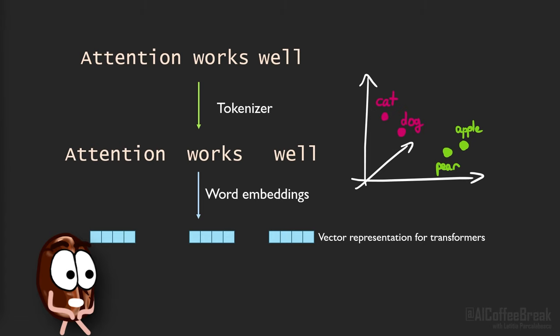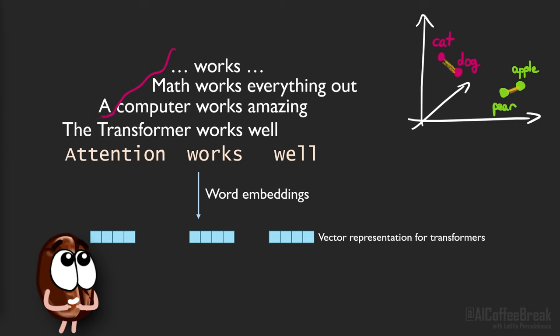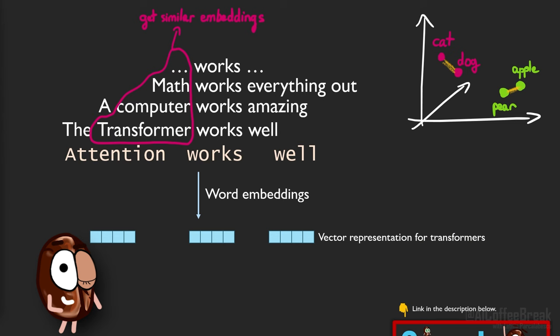The vectors could be initialized randomly, or even better, with word embeddings. Word embeddings work after the idea that distances between embeddings represent word similarity — a word is defined by the company it keeps. Words that are semantically more similar are initialized with vectors close in the high-dimensional vector space. You can easily download such word embeddings, as they are pre-computed by counting how often words appear next to other words in text on the internet or other large corpora. Neural networks learn to assign similar embeddings to words if they both have the same neighbors. You can learn more about word embeddings in our previous video.